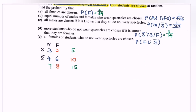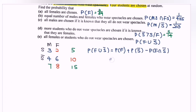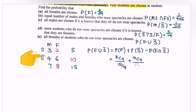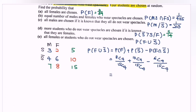For part E, all female or students who do not wear specs are chosen. Using the union formula: P(female) + P(no specs) − P(female ∩ no specs), which is 8C4 over 15C4 plus 10C4 over 15C4 minus 6C4 over 15C4. By calculator, the answer is 53 over 273, which is the probability that female union with students who do not wear specs are chosen.